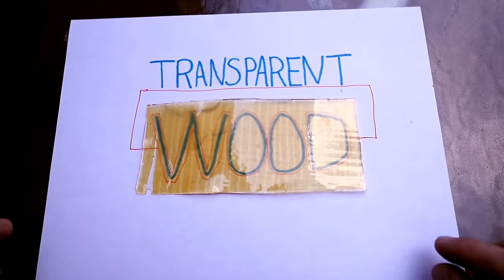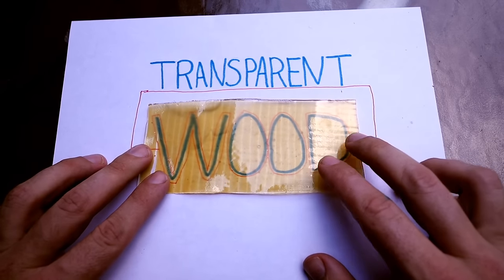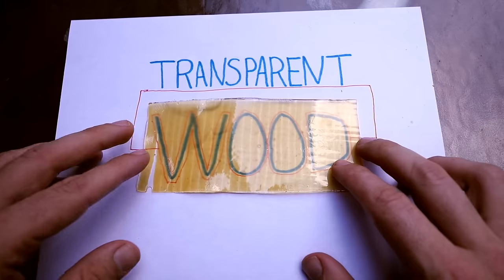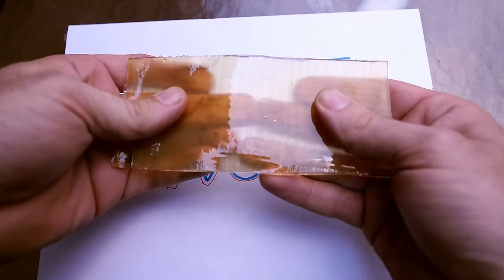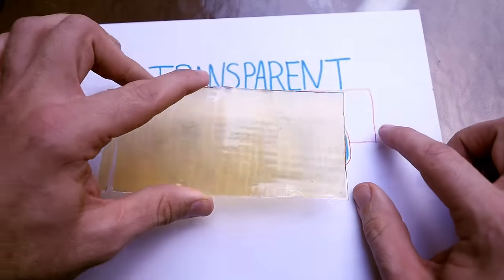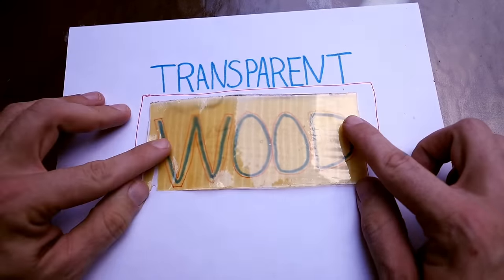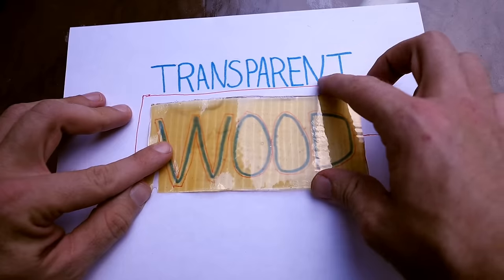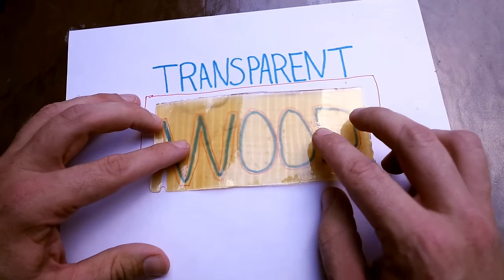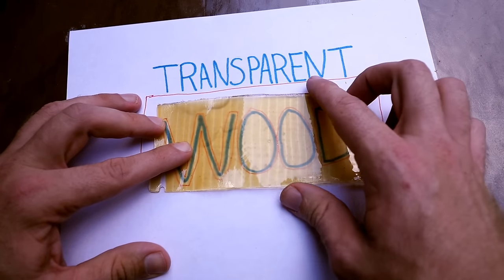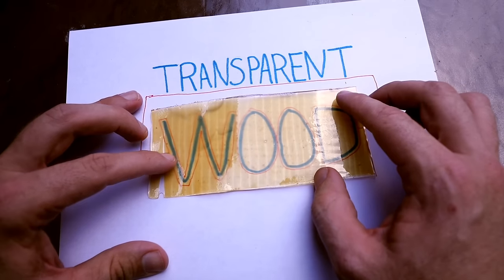This idea is not mine. It came from this great publication from Zhu et al., where they found a way to basically strip out the non-functional parts of the wood that make it opaque but don't really add to its strength, and leave behind just the cellulose, which is actually transparent.